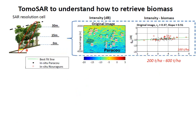Now we move to what we really want: biomass. Before going to the tomographic approach, let's revisit the traditional approach. With traditional SAR, we have no vertical information — just a single measurement. Looking at biomass from 200 to 600 tons per hectare versus radar backscatter, there is some correlation at P-band, but it is not sufficient. There appears to be some saturation.